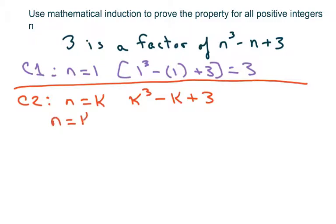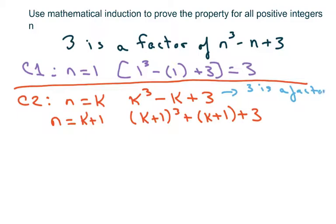So, we want to see what it would be for the next term. And that means everywhere there's a k, you put k plus 1. Alright, and we're assuming that 3 is a factor of this. So, just assume that 3 is a factor. Because we're going to come back to that.